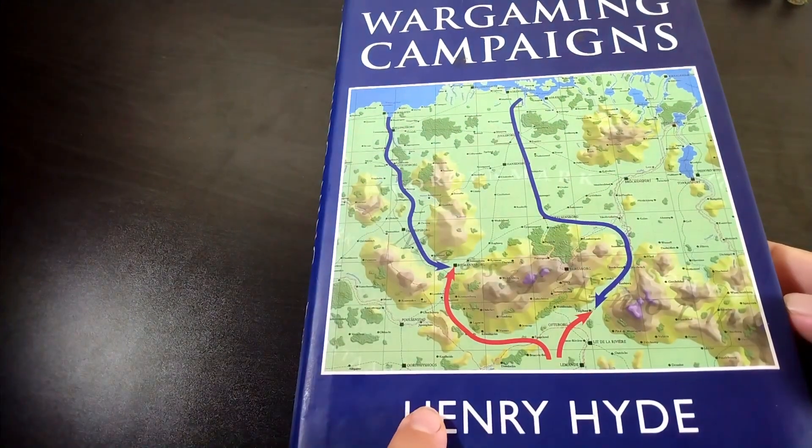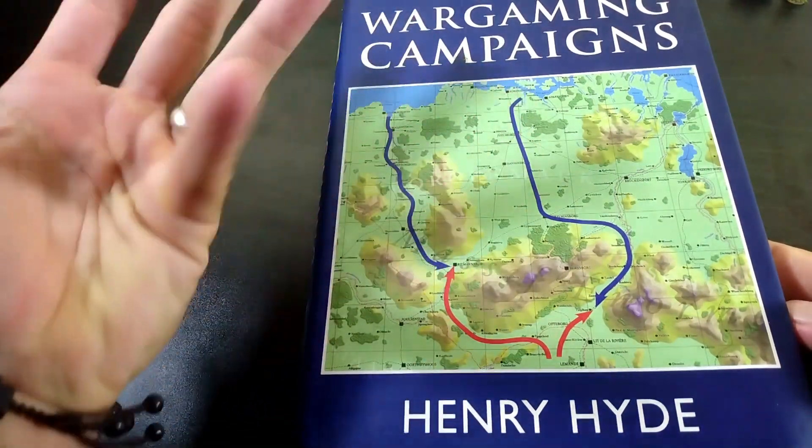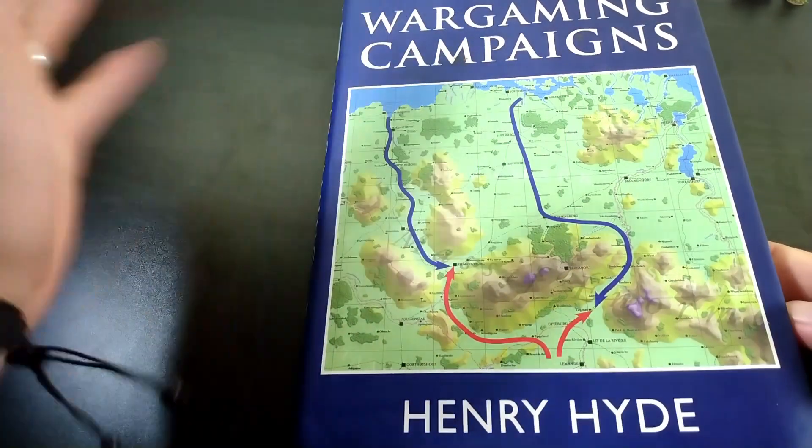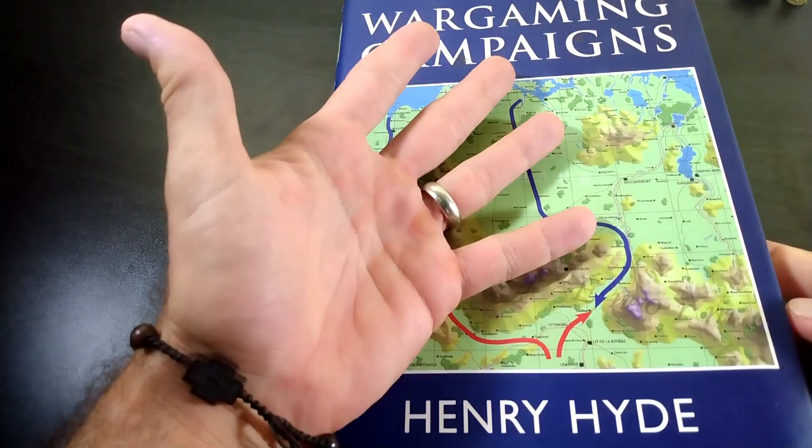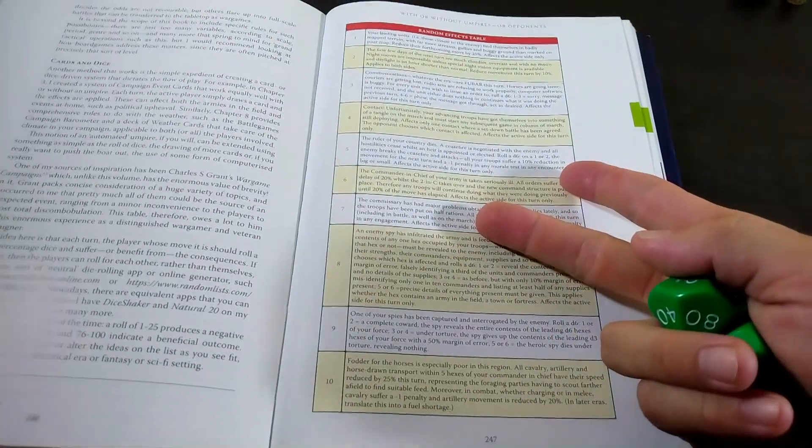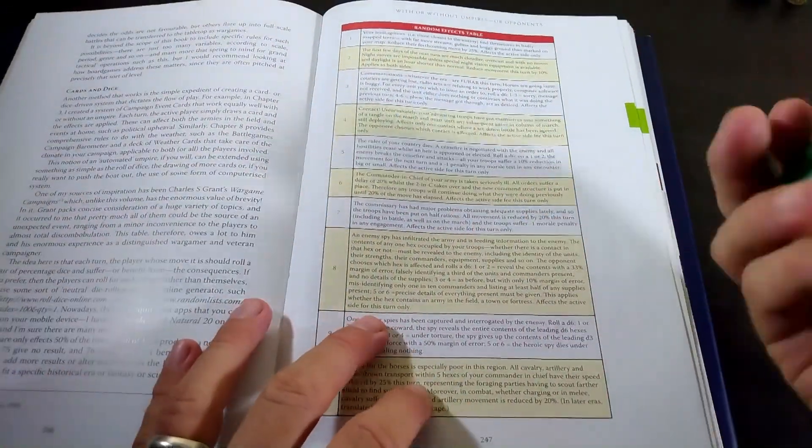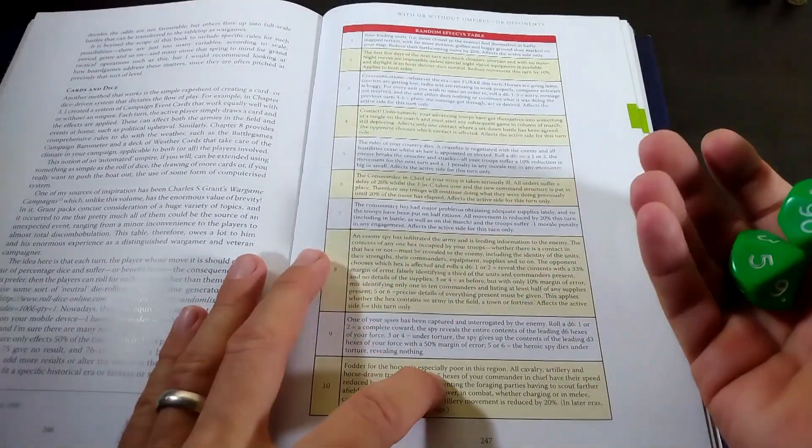But before we get to the nitty-gritty of how that scenario is going to work, we should take a look at Henry Hyde's wargaming campaigns, because April 2nd, I think it's like the night of April 1st, it's fine. We're going to start, and it's been like eight months since we've run any of these games, so I think we're okay rolling for new random events. One for the Bromans, one for the skeletons, and these events will take place throughout the duration of the siege.